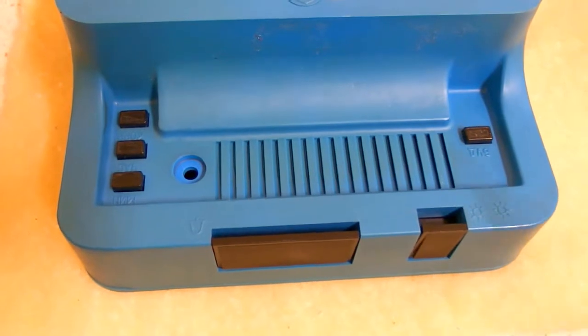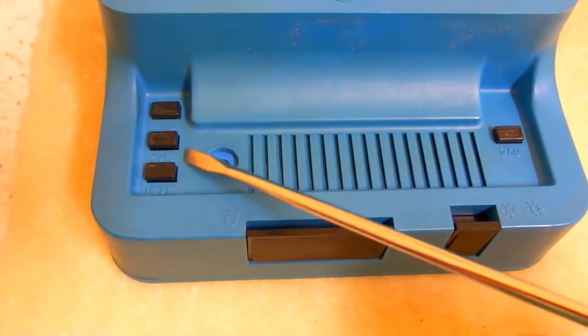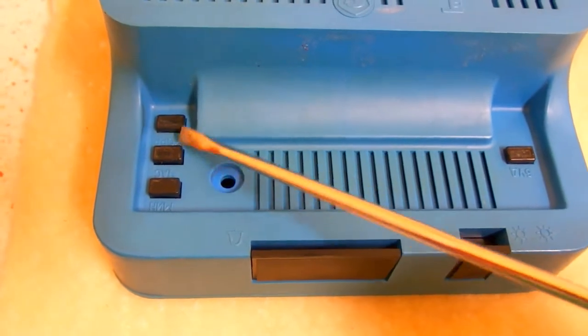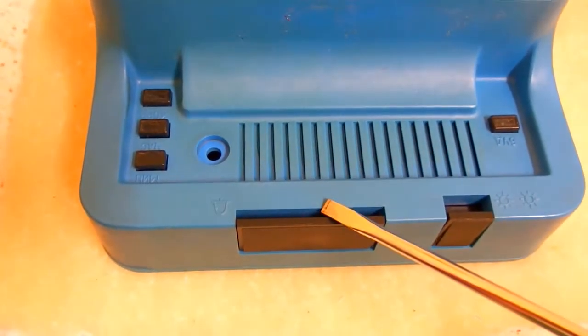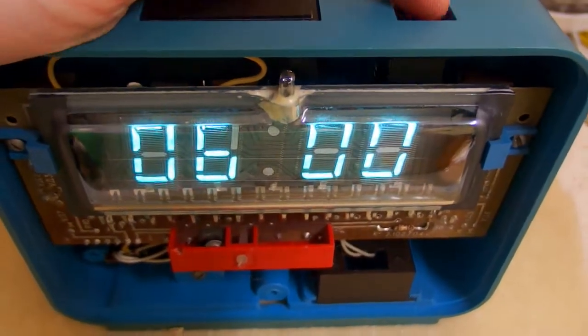And here come the buttons. This is to set the alarm clock. This is to set the minutes, hours. This is to reset the clock. This is to stop the alarm. This one is to choose high or low brightness.